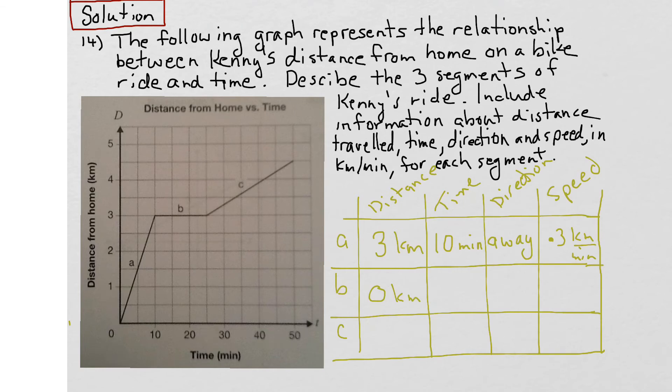How long did he travel zero kilometers? He started here at ten minutes and then stayed that way for another, looks like, fifteen minutes. Ten minutes plus five minutes for a total of fifteen minutes. If he didn't travel any distance and it took him fifteen minutes there, that means that he must have been at rest for fifteen minutes. So the direction he was traveling here would just be none. He was stationary.